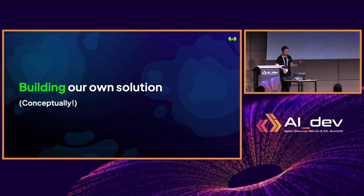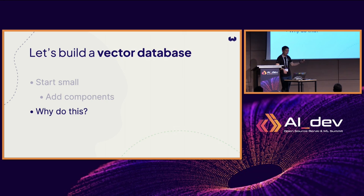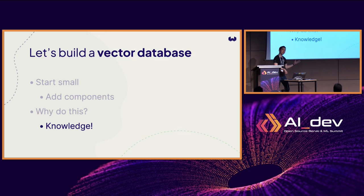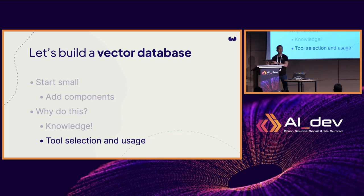So here's what we're going to do for the next 25, 30 minutes. We're going to build a vector database from scratch. We're going to start really small, essentially from nothing, and add bits and pieces to it. Why are we doing this? Hopefully you can learn some stuff — that's why we're here. More to the point, by going through this exercise together, you'll learn about what these components do, and when you're choosing a vector database from that huge list you saw earlier, you'll be able to make a better informed choice.